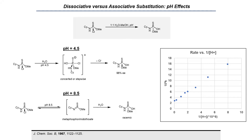Dissociative substitution mechanisms at phosphorus-5 have also been studied in the context of organic synthesis. The reaction rate and stereochemical outcome of nucleophilic substitution of N-cyclohexyl phosphorometothioic chloride with water was studied at various pHs. It was observed that at pH 4.5, starting with a single enantiomer of starting material, the hydrolysis product was formed stereospecifically in 96% EE, consistent with an associative mechanism. However, running the same reaction at pH 8.5 resulted in the formation of racemic hydrolysis product, consistent with a dissociative reaction mechanism.